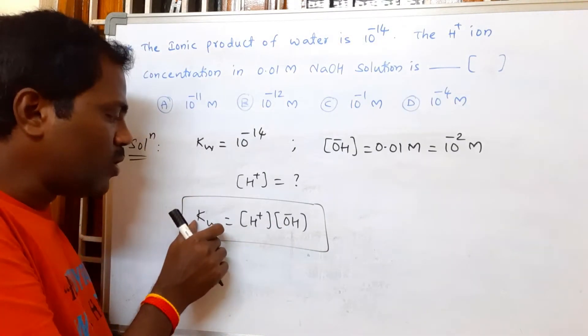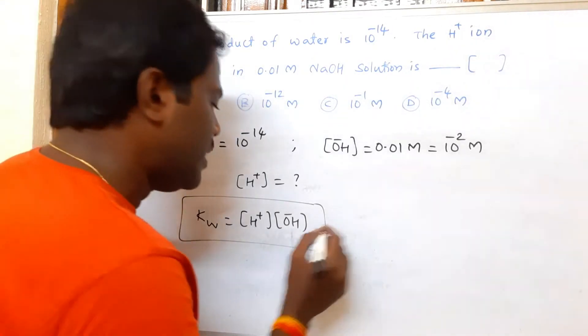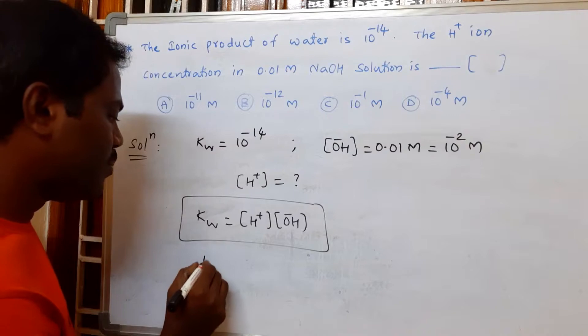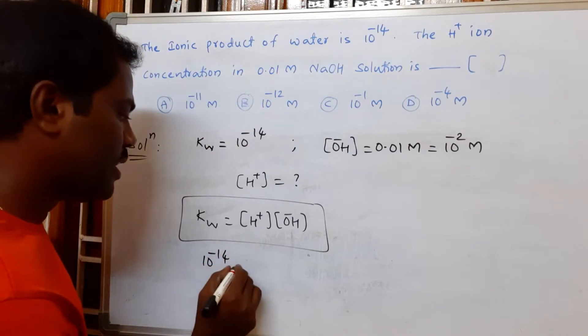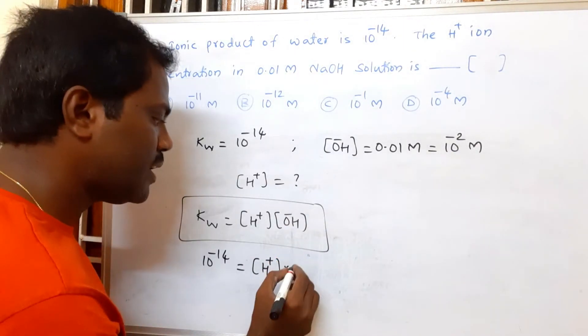We know KW value and OH- concentration value; we need to find H+ concentration. Then, 10^-14 equals concentration of H+ times 10^-2.